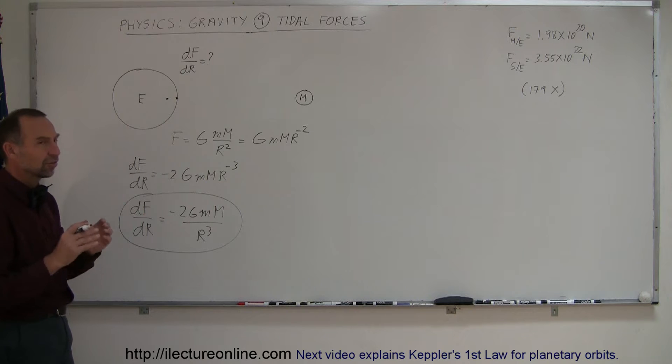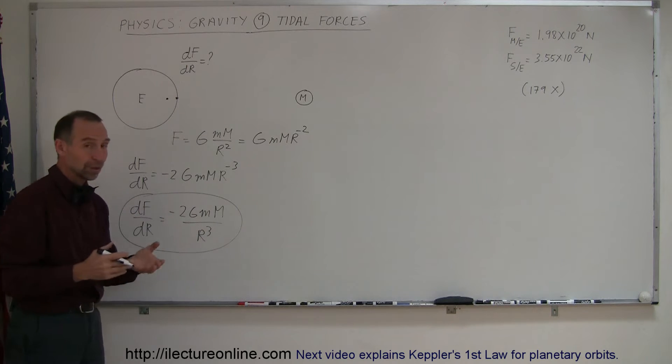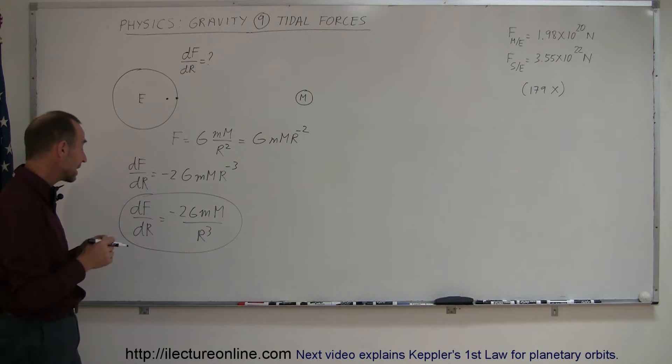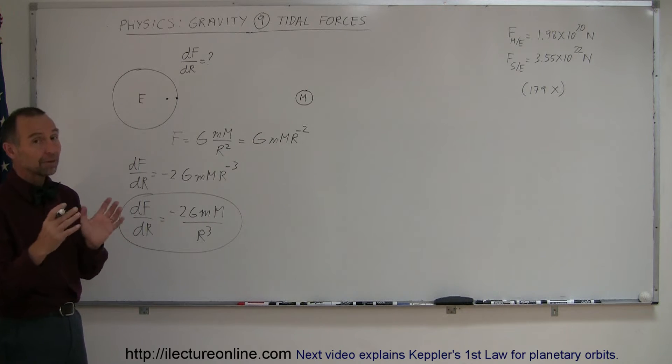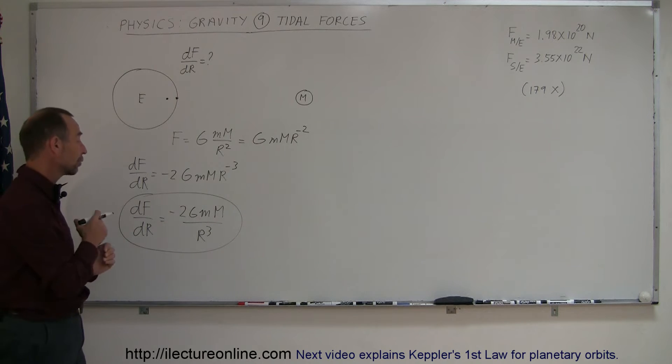Since the Sun is very far away from the Earth, R cubed becomes a really big number, so you can see that the dF/dR for the Sun may be smaller than the dF/dR for the Moon. Let's find out.